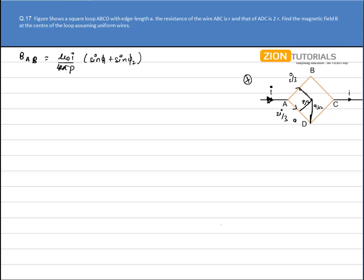The value of sin phi can be easily calculated using geometry, taking this as A by 2 and this as A by root 2. So I have A by 2 divided by A by root 2. A is cancelled, so sine phi comes out to be 1 by root 2.